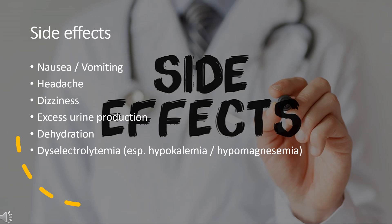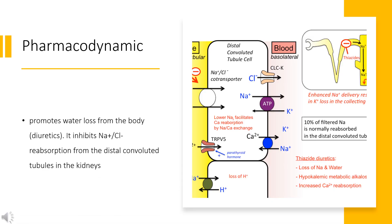Pharmacodynamics: Like other thiazides, chlorothiazide promotes water loss from the body as a diuretic. It inhibits Na+/Cl- reabsorption from the distal convoluted tubules in the kidneys.